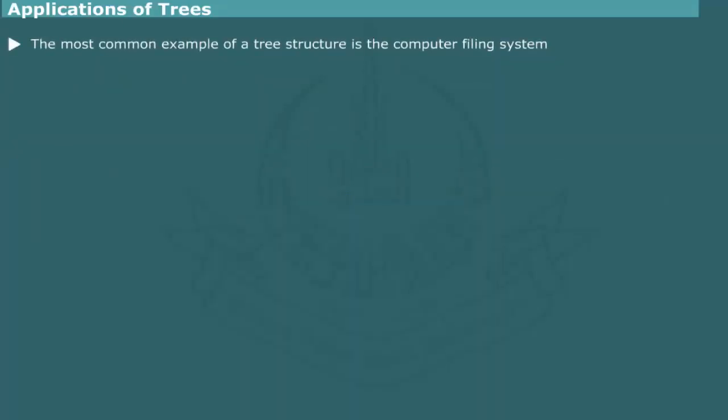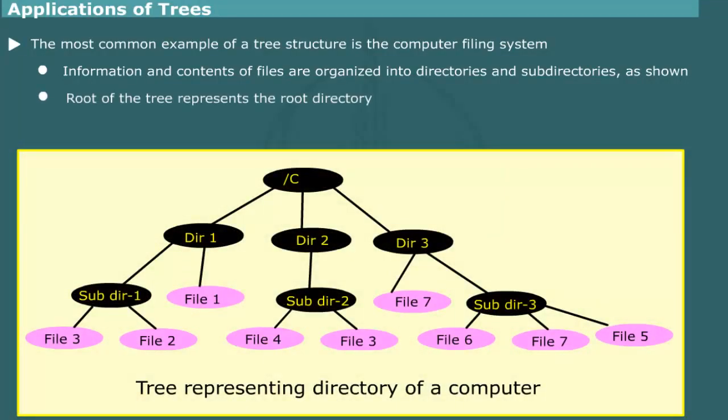Perhaps the most common example of tree familiar to computer user is the structure of filing system in operating systems such as Unix, Windows, and Mac. Information and content of a set of files residing in the computer are organized in a hierarchy of directories and subdirectories as shown. The root of the tree represents the root directory. The data files are represented at leaf levels. By traversing tree, we can determine the contents of files in each subdirectories and print their size.